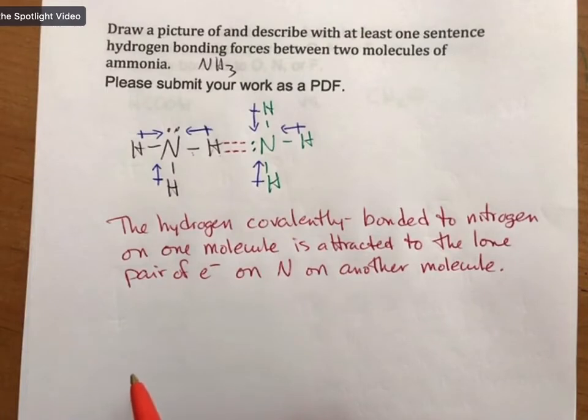Hydrogen bonding is not a bond. And there are only two types of bonds in this course, covalent bonds and ionic bonds. Hydrogen bonds are a strong version of intermolecular forces.